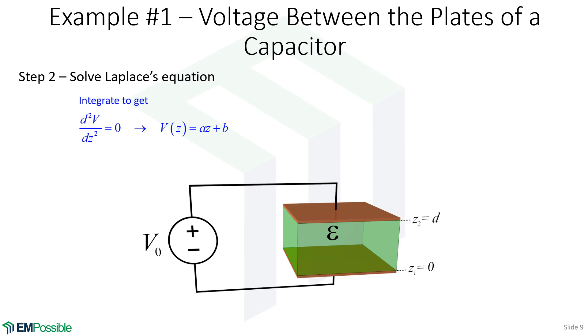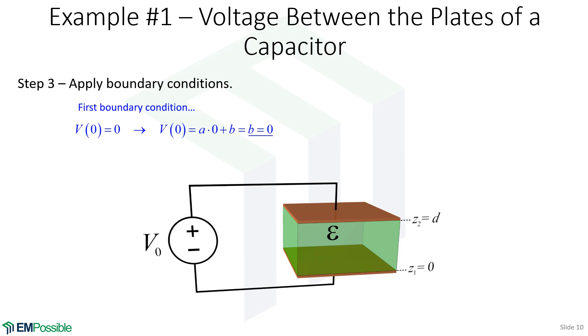As promised in the recipe, if we only have one dimension, we can solve this by integration. And so if we integrate this twice, we end up with an electric potential that is apparently varying linearly between those plates. To figure out those constants for A and B, well, that's where we use our boundary conditions.